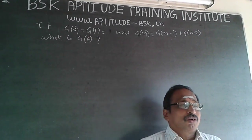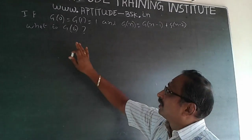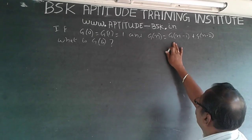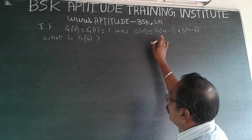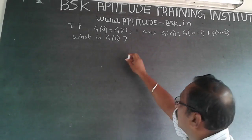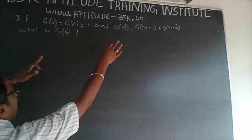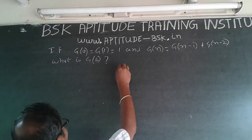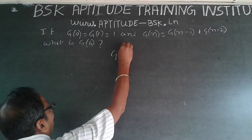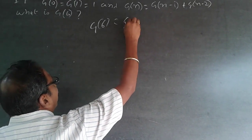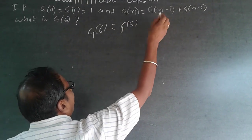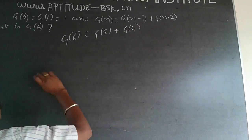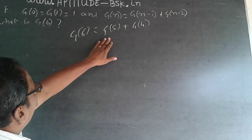So a pattern is given. g of 0 and g of 1 are equal to 1, and g of n is given as g of n minus 1 plus g of n minus 2. Whatever they asked — what is g of 6 — you apply the same pattern. So g of 6 will be equal to g of 5 plus g of 4.